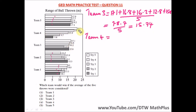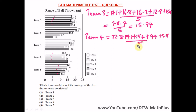For team 4: 22.3 + 19.1 + 15.4 + 9.7 + 5.8 = 72.3, divided by 5, which gives us 14.46. That's lower than team 3.